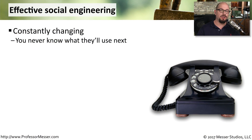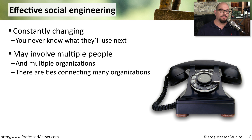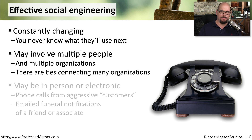Social engineering is a very low-tech form of a security attack. In fact, it doesn't involve any technology at all. It involves someone else who's trying to gain access by using social engineering techniques. You never know exactly what the bad guys are going to come up with next. They're always using different stories and ideas to try to gain information from you. Social engineering may involve one person or multiple people and multiple organizations acting simultaneously, all coordinating their efforts and hoping that you'll drop your shield and allow them access to anything they might need.